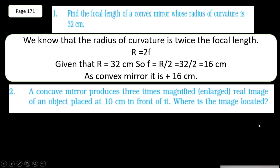The next question: a concave mirror produces a 3 times magnified real image of an object placed at 10 cm in front of it. Where is the image located? We know that magnification = −v/u. When u = 10 cm and magnification = 3, therefore v = 3 × 10 cm = 30 cm.